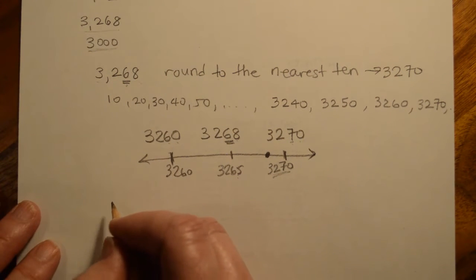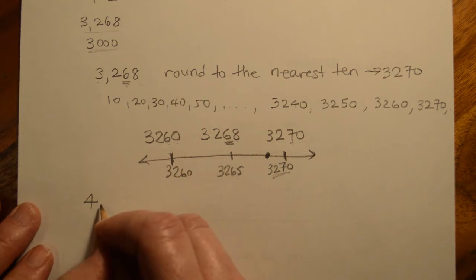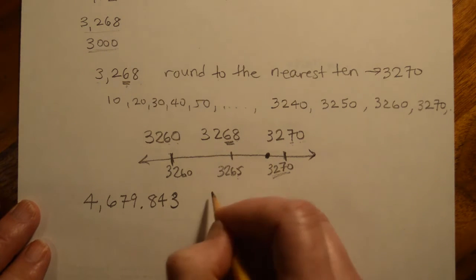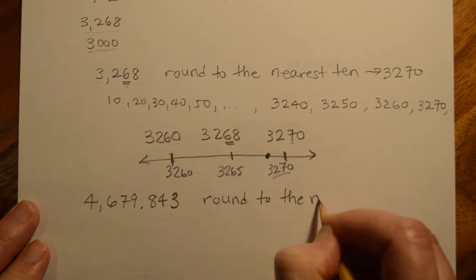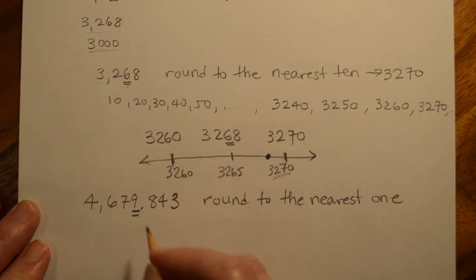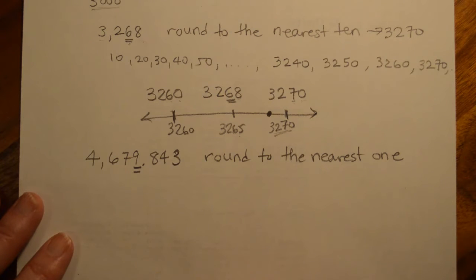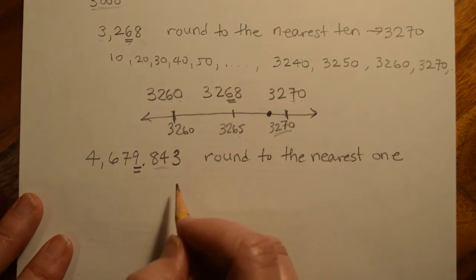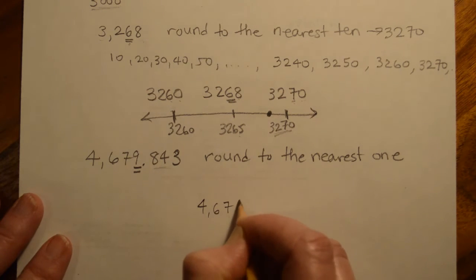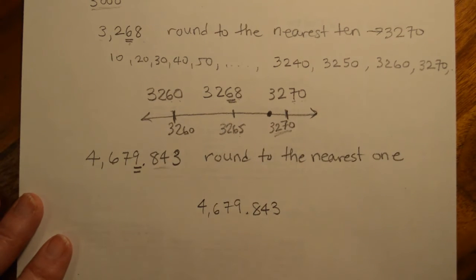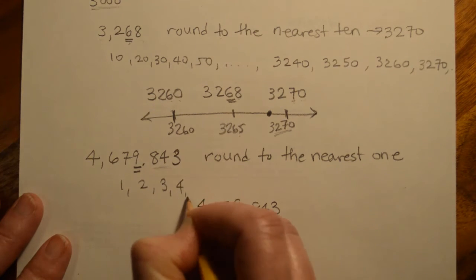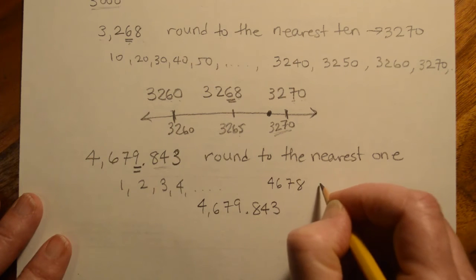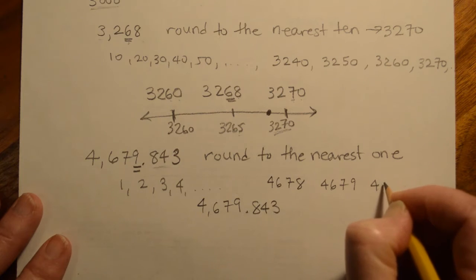Let's do another one, but let me just make it a little bit trickier. Let's say it was 4,679.843, and it said round to the nearest one. Okay, so we go to the ones place right here, and we say, what are the closest ones to that? Well, we haven't talked about decimals yet. We've talked a little bit about them, but we haven't talked about their names, but if we were to put 4,679.843 right in here, when we're counting by ones, we're counting one, two, three, four, and so forth, up to 4,678, 4,679, 4,680.